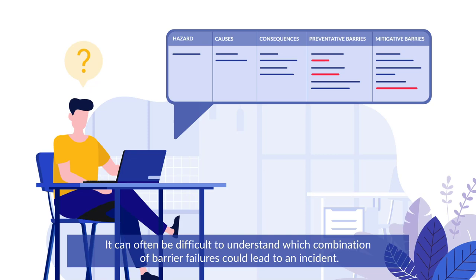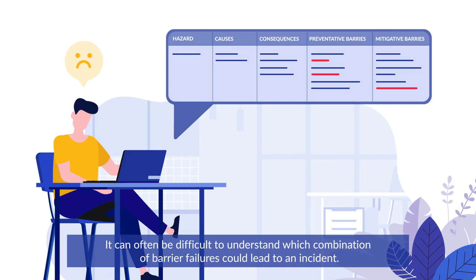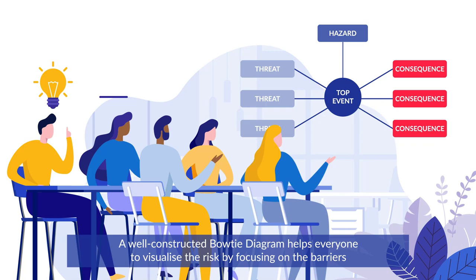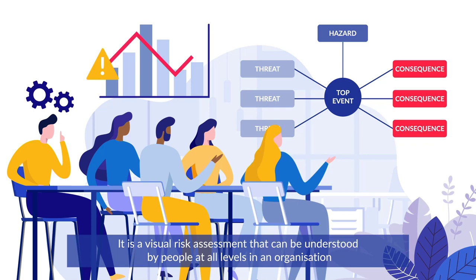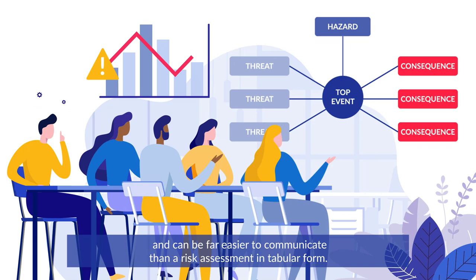A major accident is often the result of multiple barrier failures. It can often be difficult to understand which combination of barrier failures could lead to an incident. This is where bowtie diagrams come in. A well-constructed bowtie diagram helps everyone to visualise the risk by focusing on the barriers that prevent incidents from occurring or those that prevent one from getting worse. It is a visual risk assessment that can be understood by people at all levels in an organisation and can be far easier to communicate than a risk assessment in tabular form.